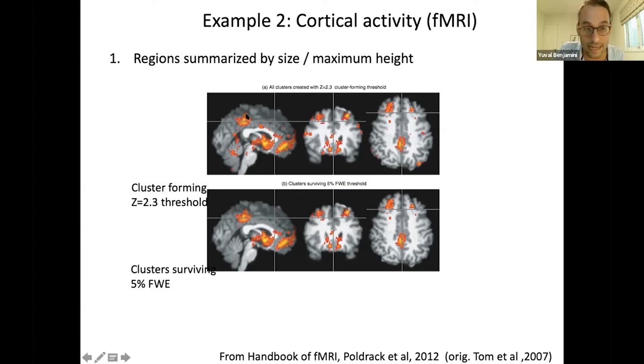If you just do multiple comparison correction on this, we get very little phenomena, very hard to tell apart important and unimportant things. Then they group together all the neighboring three-dimensional voxels into what they call clusters. Then using either parametric theory or permutation stuff, they give a p-value and remove all the clusters, giving a 5% family-wise error rate, meaning that the probability that any one of these clusters is by mistake is smaller than 5%.